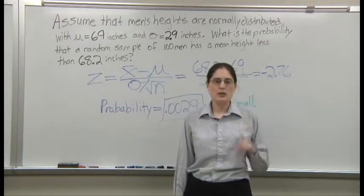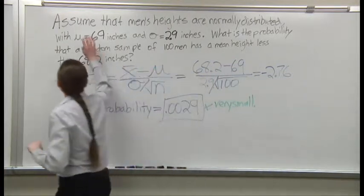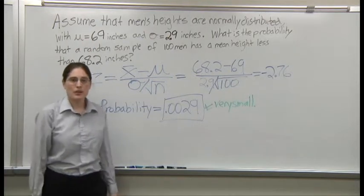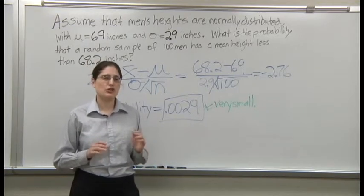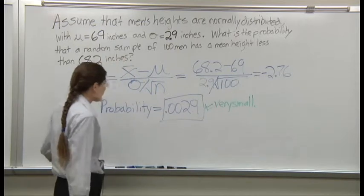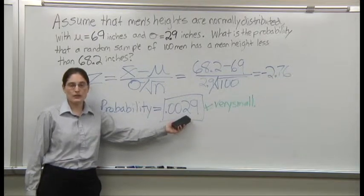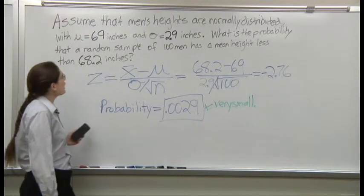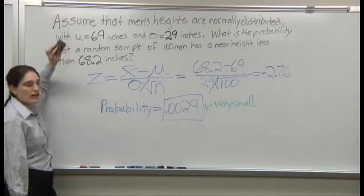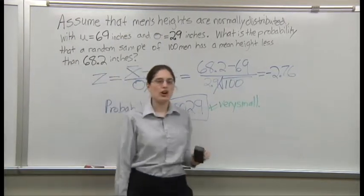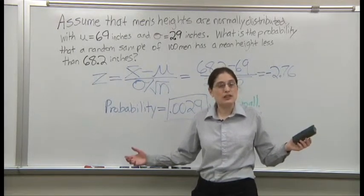So there's two possible explanations. Well, three. One is we messed up the experiment. The other two are this is wrong or we just happened through a weird coincidence to get a whole bunch of men who were shorter than average. In this case, because the probability of coincidence is so very small, I'm gonna say I don't believe the population mean. Our sample mean was far enough away from the population mean that the population mean looks like it's wrong.